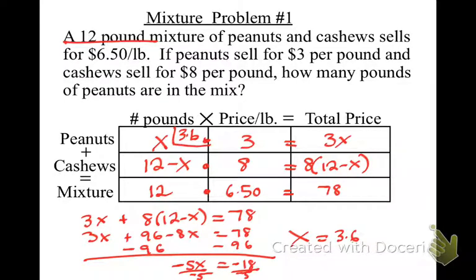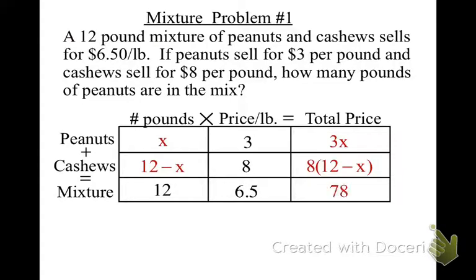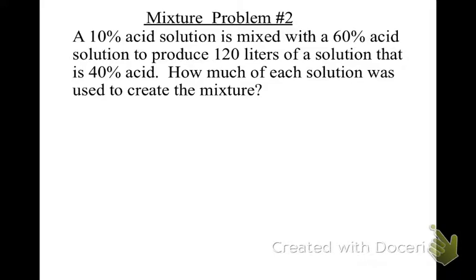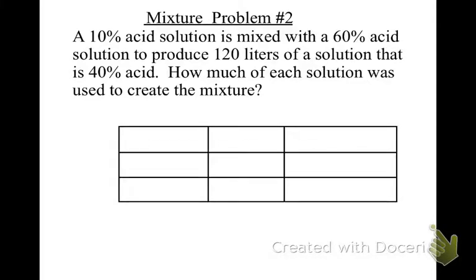What does that mean? There are 3.6 pounds of peanuts. And what else do I have the ability to find? The cashews — 8.4 pounds. Do you find these confusing or are you understanding it? Because they're a lot like what we did in chapter 8 — it's kind of the second time around. They love to do these mixture problems with acids and things in chemistry — acids, paints, butterfat. You're going to get it all.